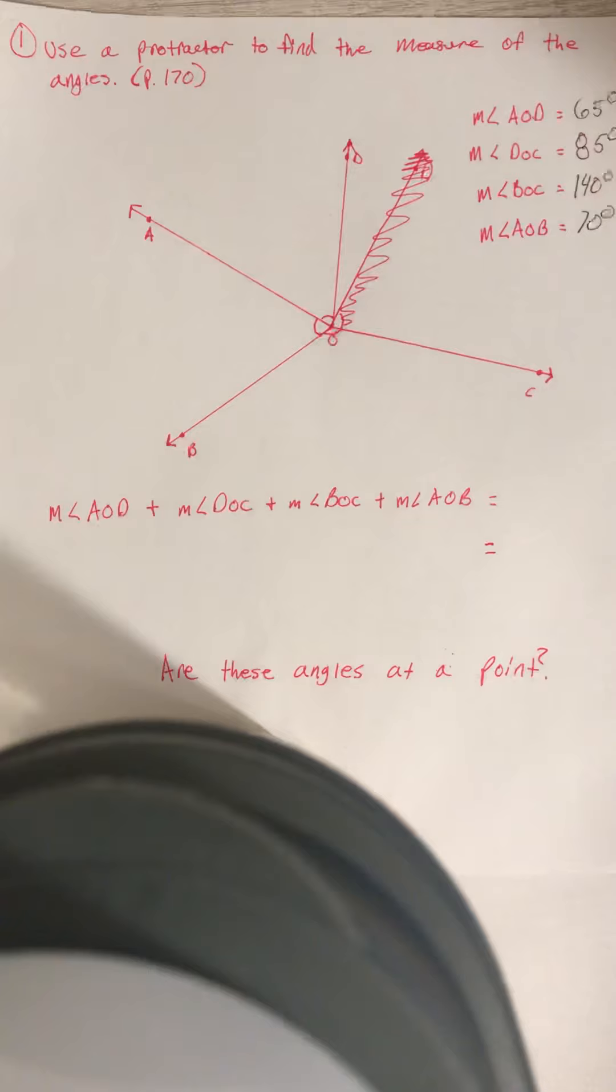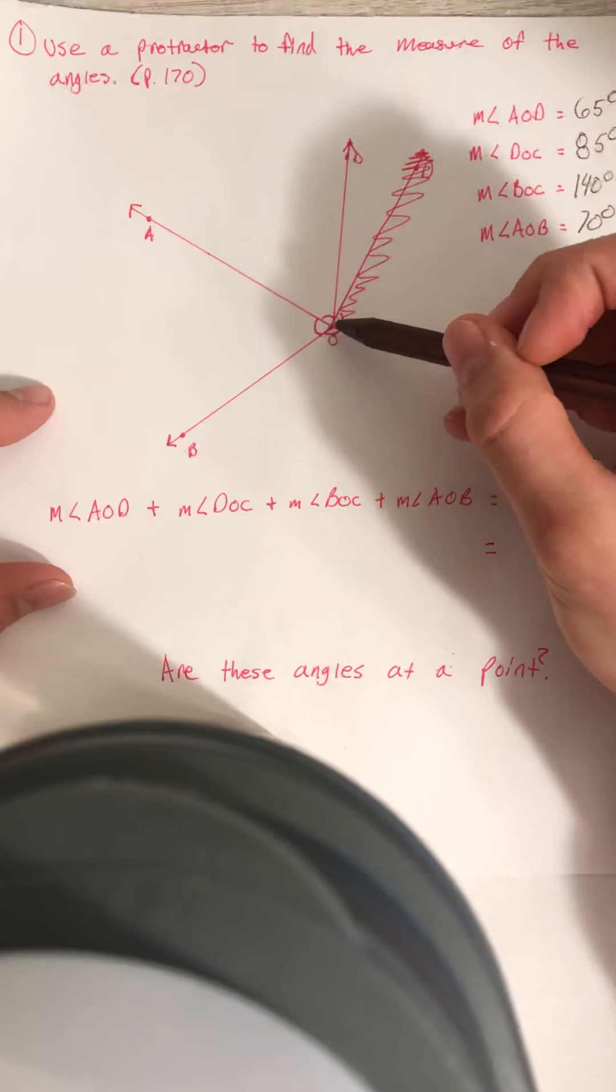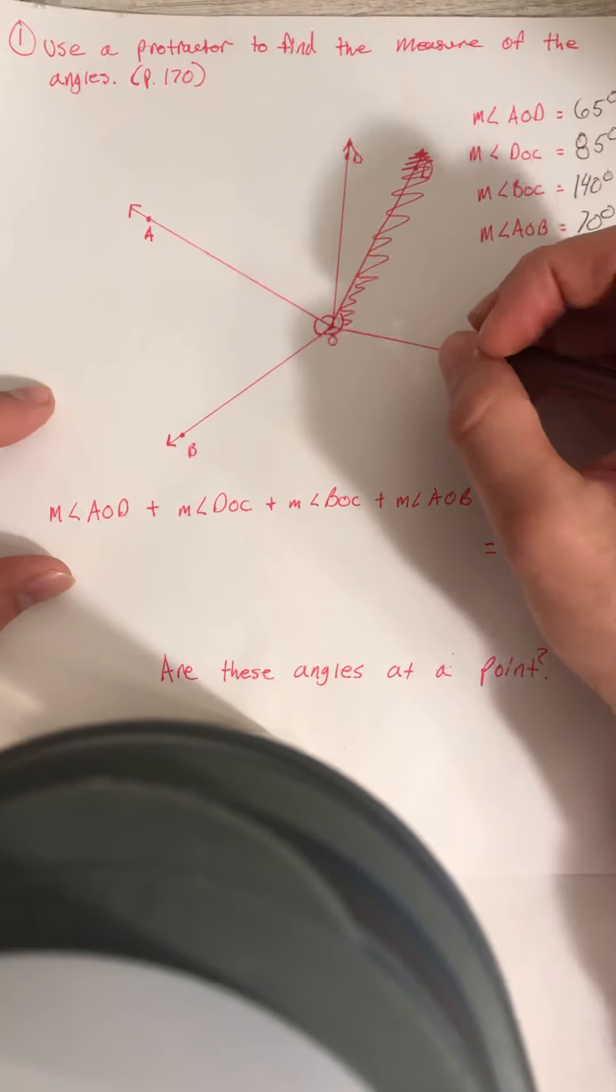So once I get those, I have them all over here on the top right. These are all of my angle measures. Now, all of these angle measures, if they are correct, will add up to 360 degrees because they meet in the middle. They have a midpoint. These are angles at a point.